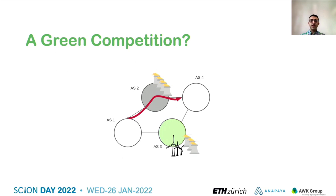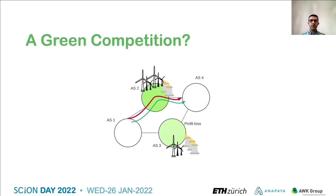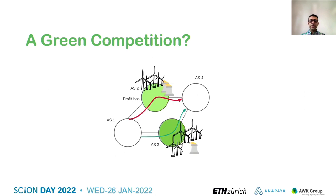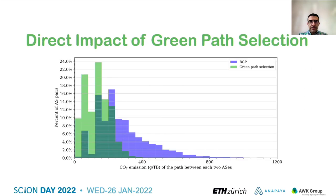As an example in this figure, traditionally all traffic from AS1 to AS4 goes through AS2, but with green path selection in place, a portion of traffic would go through AS3, which is greener. To win back its traffic, AS2 would increase its use of renewable energy resources and AS3 would lose the gained traffic. This time, AS3 increases its use of renewable energy resources to win back the traffic. The whole procedure would finally result in a greener internet.